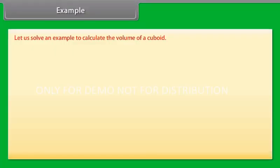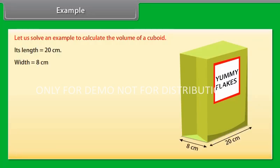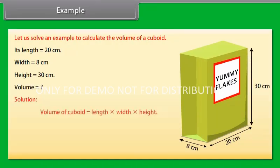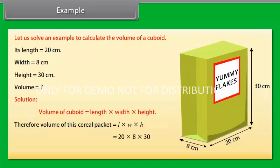Let us solve an example to calculate the volume of a cuboid. Look at this cereal packet. Its length is 20 cm, width is 8 cm, and height is 30 cm. We have to find its volume. We know that the volume of a cuboid is L × W × H. Therefore, the volume equals 20 × 8 × 30, which is equal to 4800 cm³.